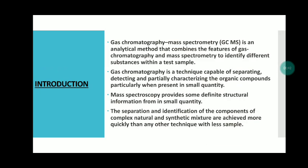Introduction. Gas chromatography mass spectrometry is an analytical method that combines the features of gas chromatography and mass spectrometry to identify different substances within a test sample. Gas chromatography is a technique capable of separating, detecting, and partially characterizing organic compounds, particularly when present in a small quantity. Mass spectrometry provides structural information from small quantities. The separation and identification of components of a complex natural and synthetic mixture are achieved more quickly than any other technique with less sample. It is one of the most accurate and efficient tools for analyzing volatile organic samples.